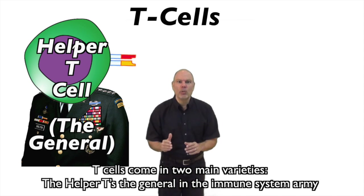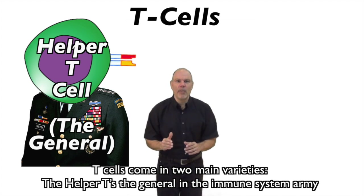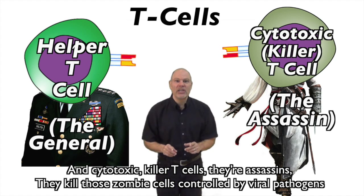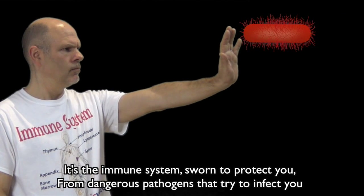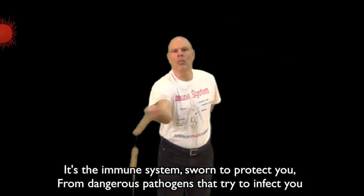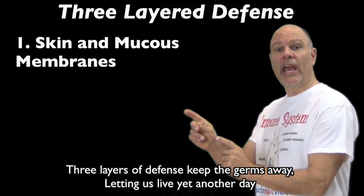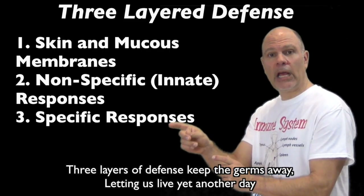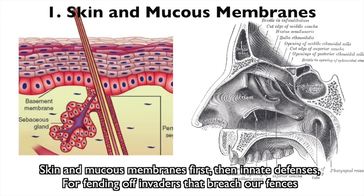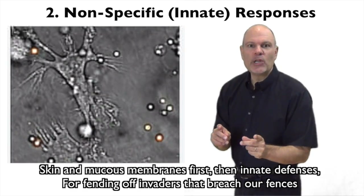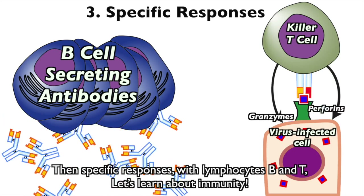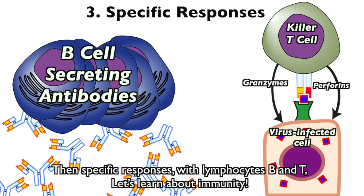T-cells come in two main varieties. The helper T is the general in the immune system army, and cytotoxic killer T-cells are assassins — the killer zombie cells controlled by viral pathogens. It's the immune system, sworn to protect you from dangerous pathogens that try to infect you. Three layers of defense keep the germs away, letting us live yet another day. Skin and mucus membranes first, then innate defenses, fending off invaders that breach our offenses. Then specific responses with lymphocytes B and T — let's learn about immunity.